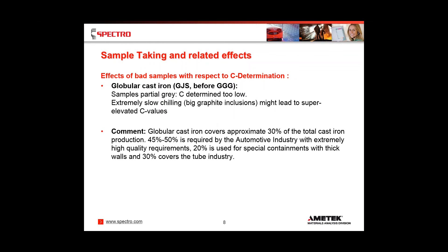For globular cast iron, samples with partial gray cause carbon to be determined too low — that's what we typically see. Extremely slow chilling with graphite inclusions might lead to super-elevated carbon values. Globular cast iron covers approximately 30% of total cast iron production. 45% to 50% of that is used by the automotive industry, which has extremely high quality requirements. 20% is used for special containments with thick walls and 30% covers the tube industry. Carbon results are directly related to the process control.